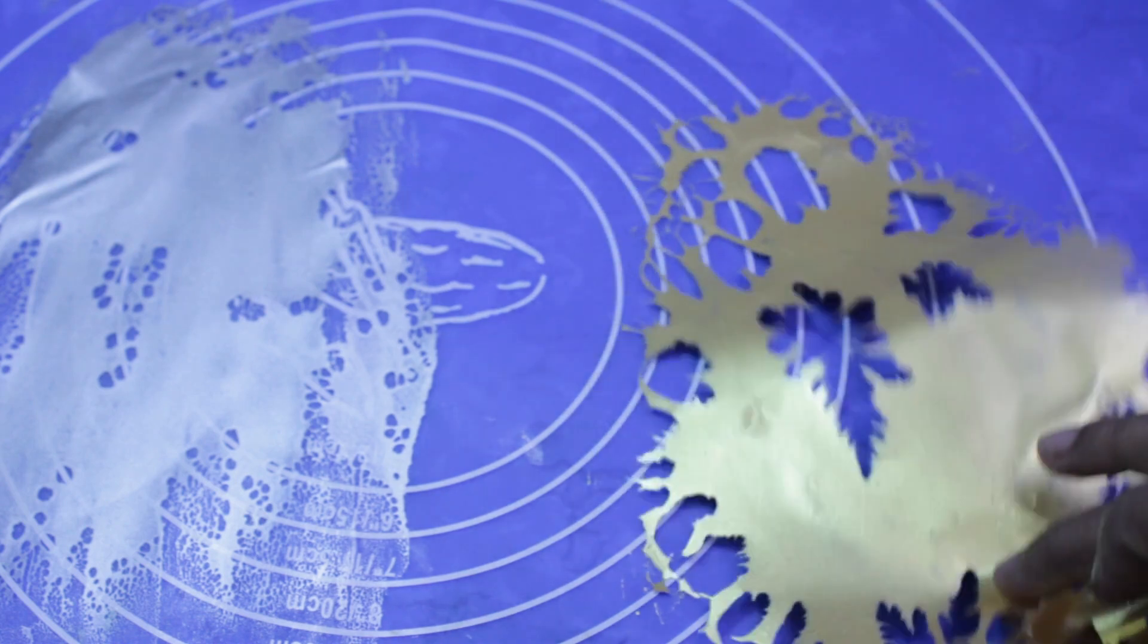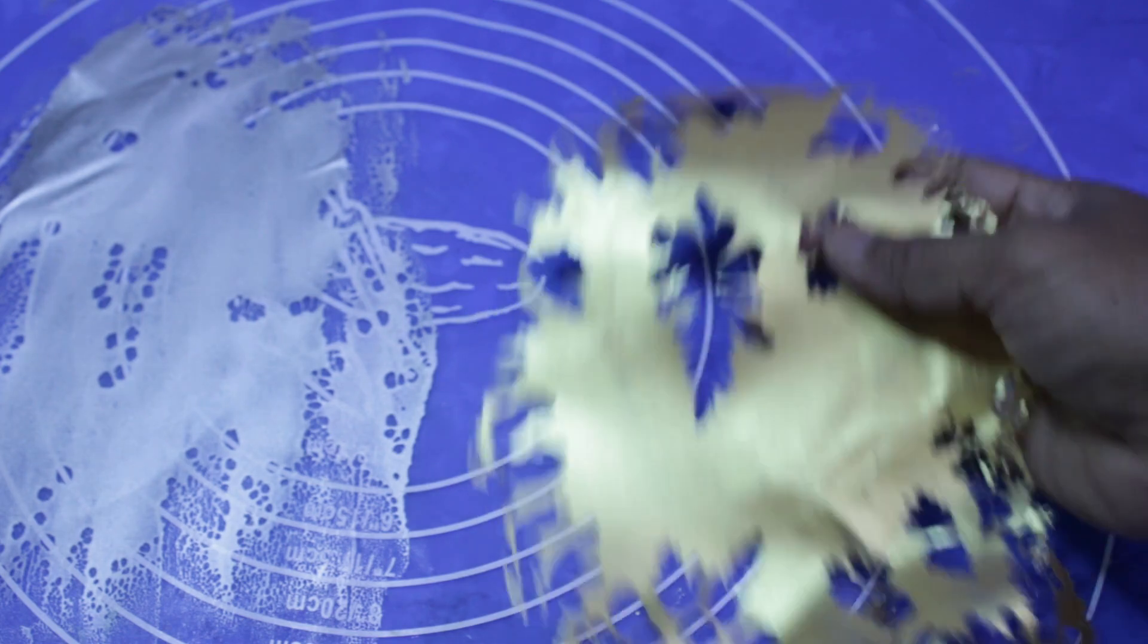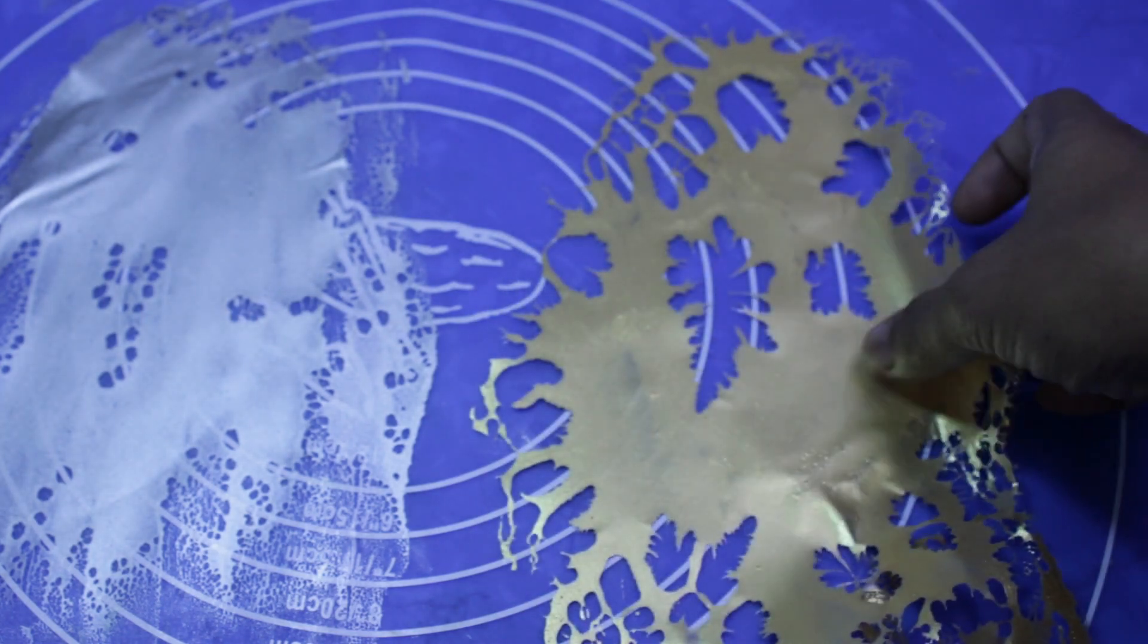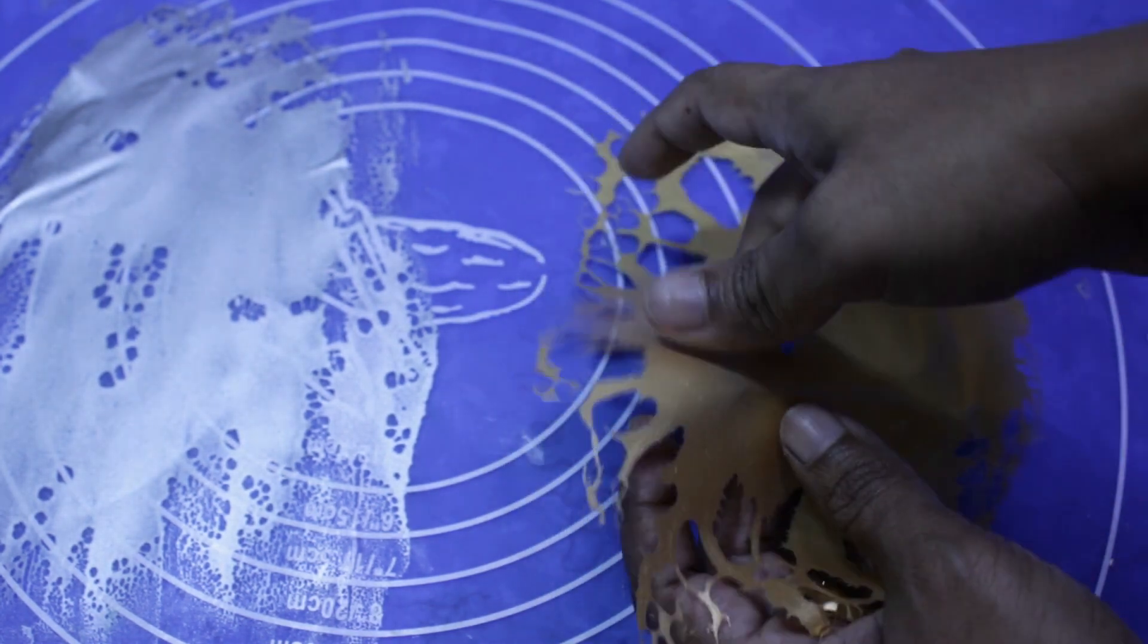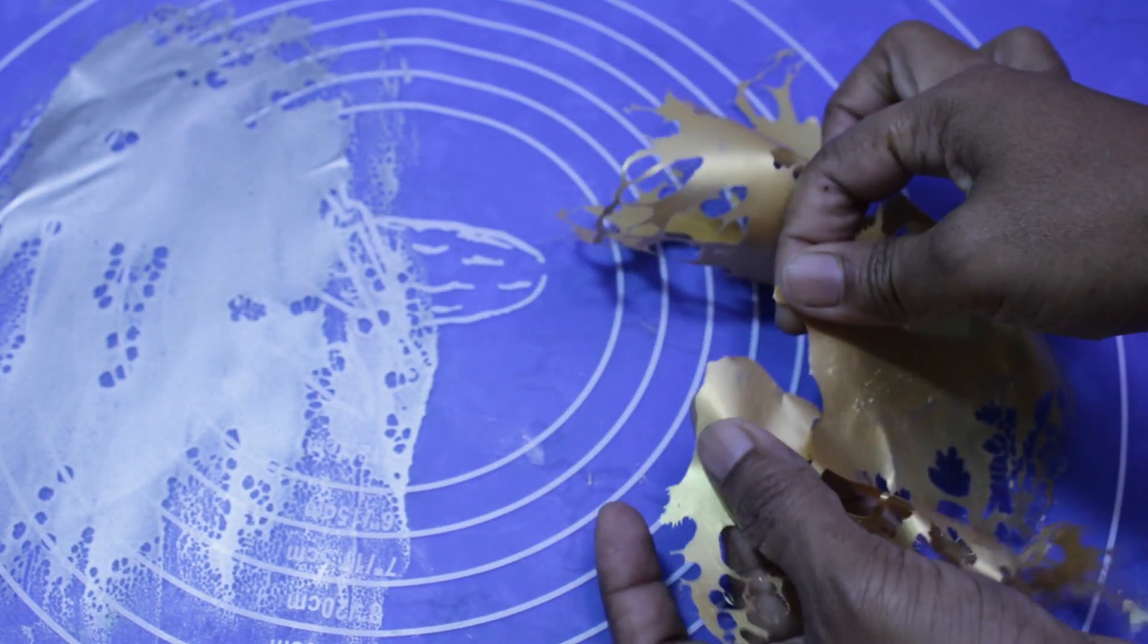So like this you can make a sheet, or I can make it into small pieces like this. Then I can use them.